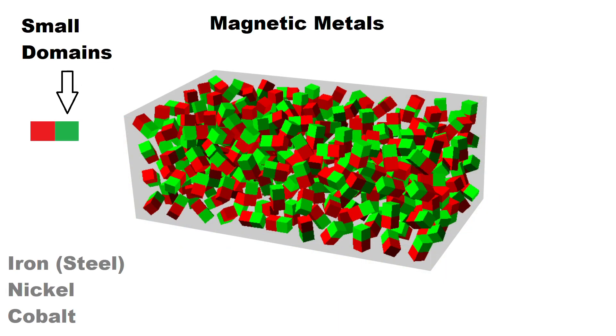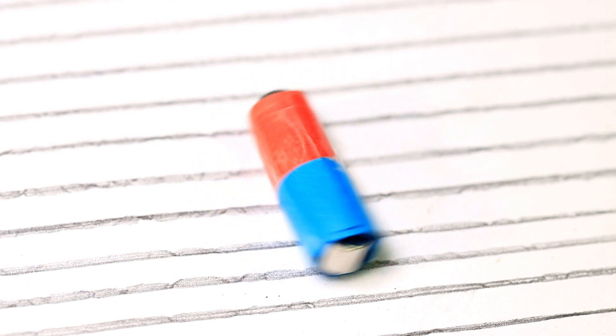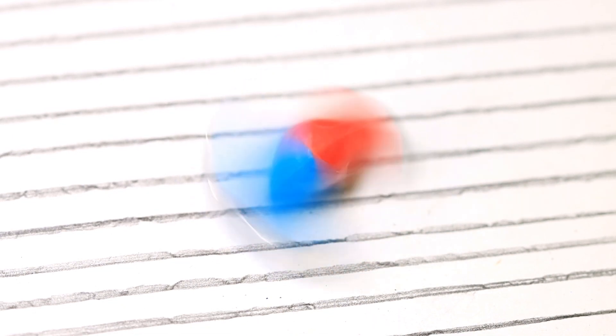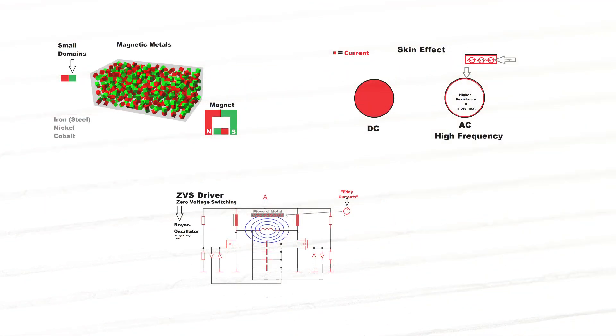There are small domains in them which align themselves according to the polarity of the magnetic field. You can imagine them like this. If the magnetic field changed quickly the domains also changed their direction quickly. This creates even more heat. That's enough about the function of an induction stove.